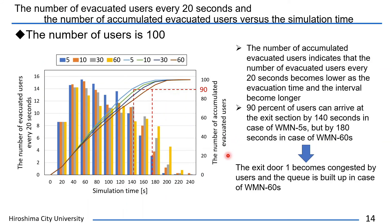This figure shows the number of evacuated users every 20 seconds and the number of accumulated evacuated users versus simulation time. The evacuation rate becomes slower as the interval becomes longer. 90% of users can arrive at the exit section by 140 seconds in case of WMN-5 seconds, but by 180 seconds in case of WMN-60 seconds.